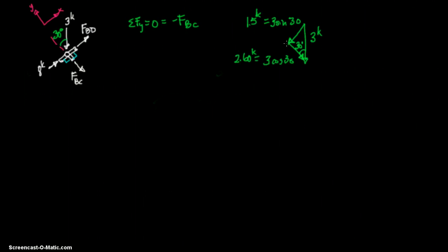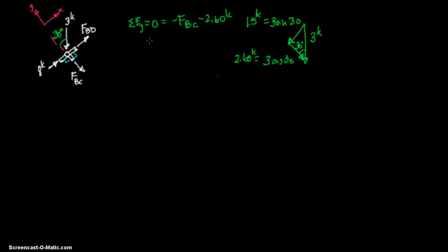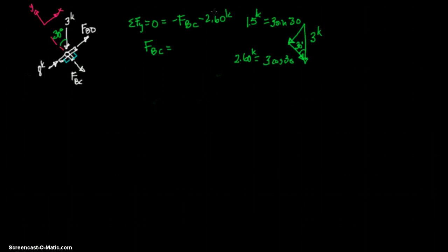2.60 kips. Now those are our components. This is going to be our y component, and that's going to be negative, so let's go ahead and put that in there. 2.60 kips. And that's our y component, all of our forces in our y direction, so we solve. FBC turns positive. FBC equals a negative 2.6, and remember that negative kips is compression.